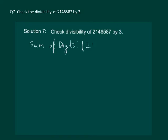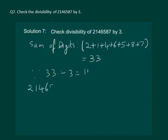We get 2 plus 1 plus 4 plus 6 plus 5 plus 8 plus 7 which is equal to 33. Now, since 33 is divisible by 3, we get that 2146587 is divisible by 3.